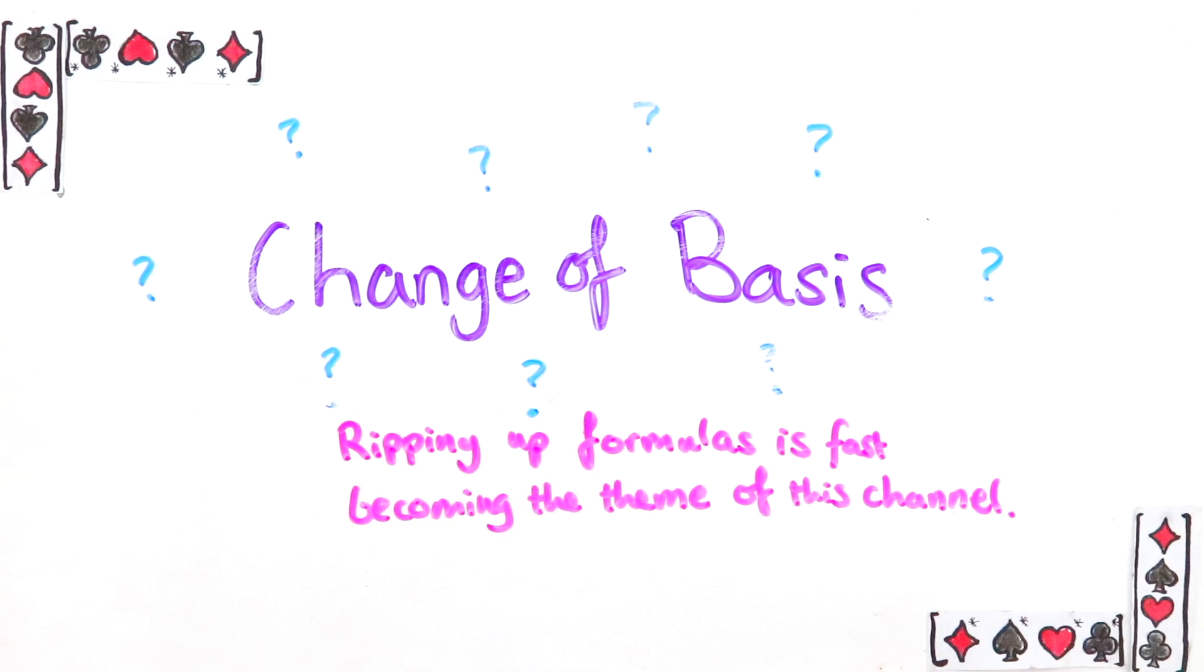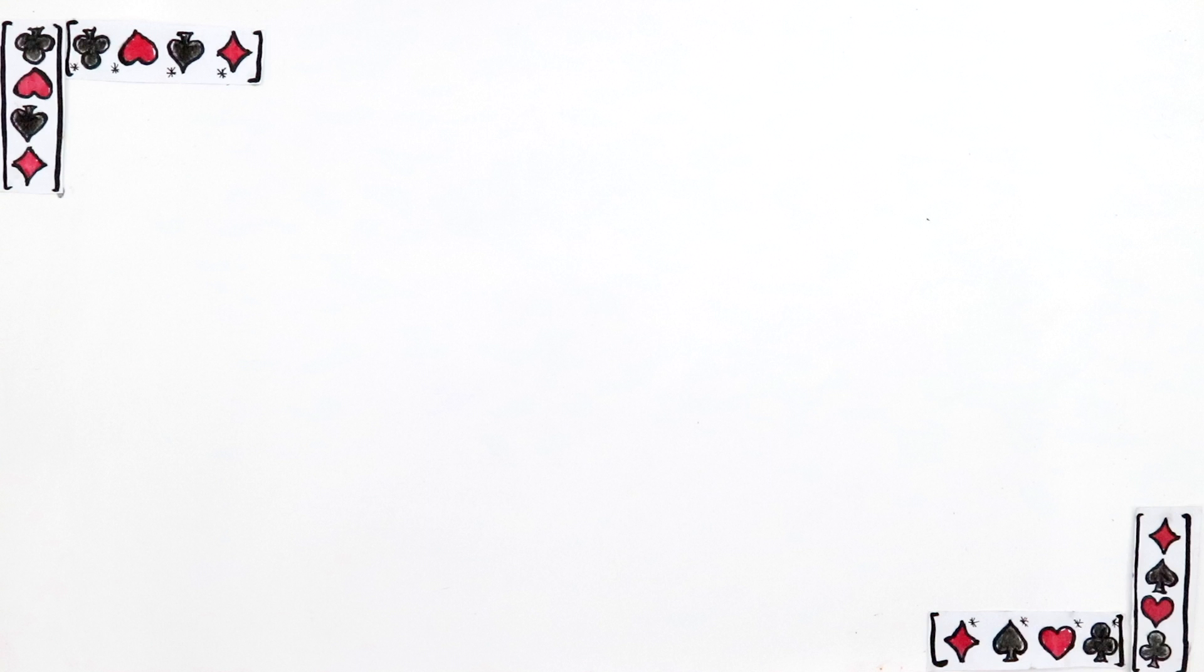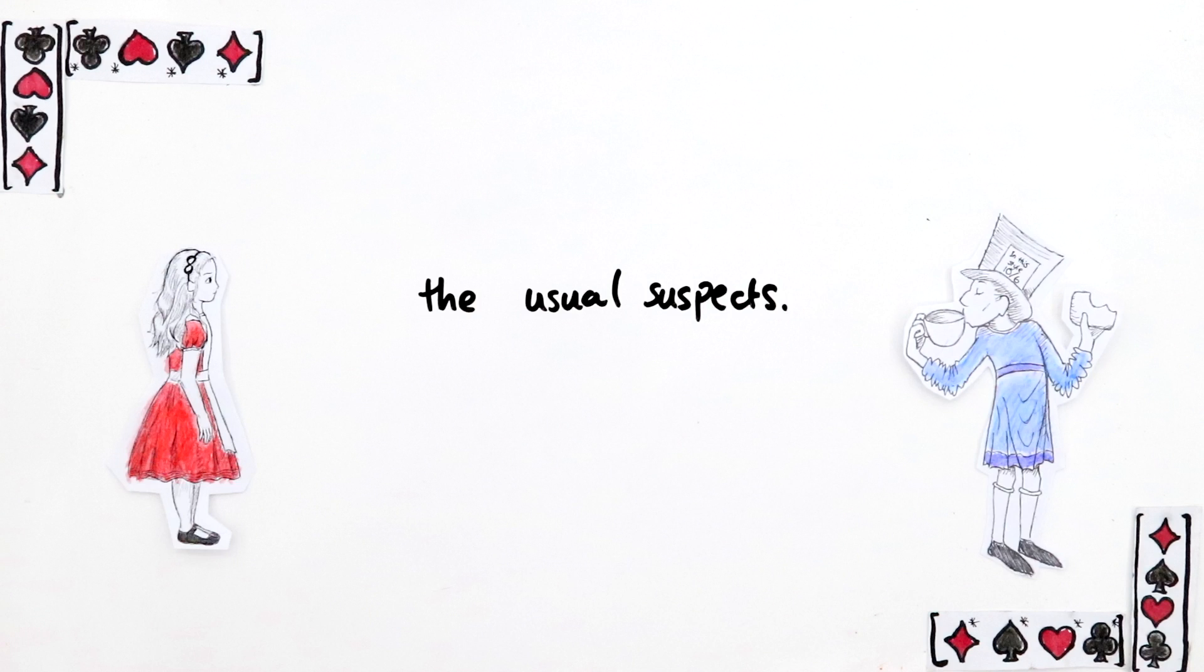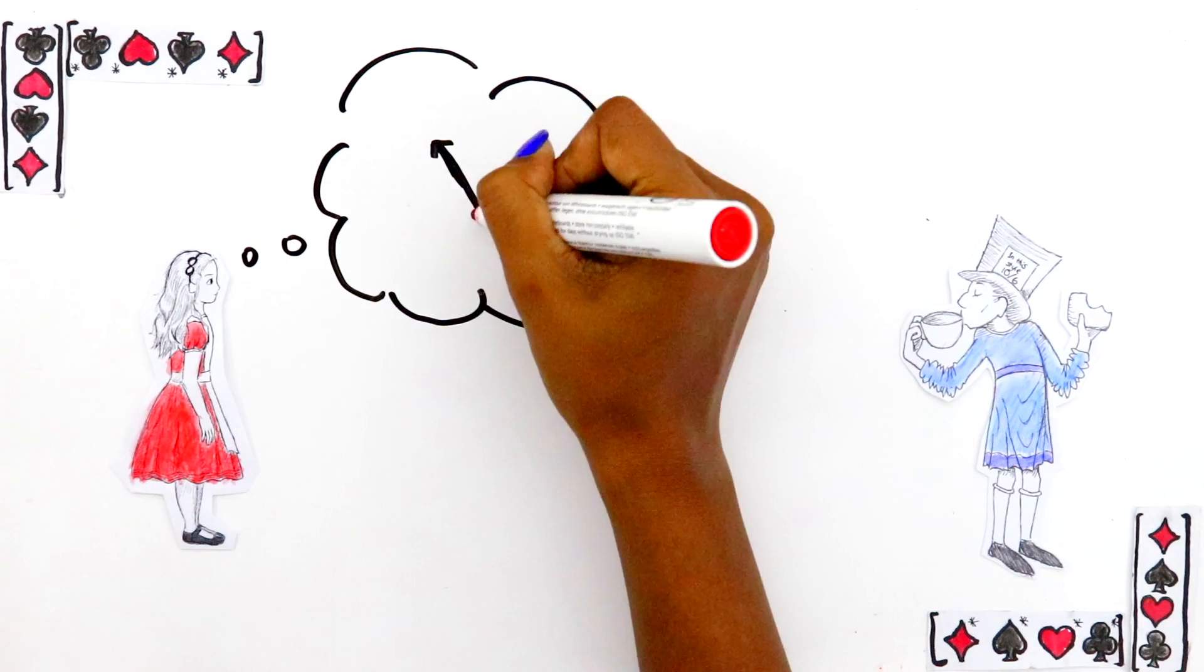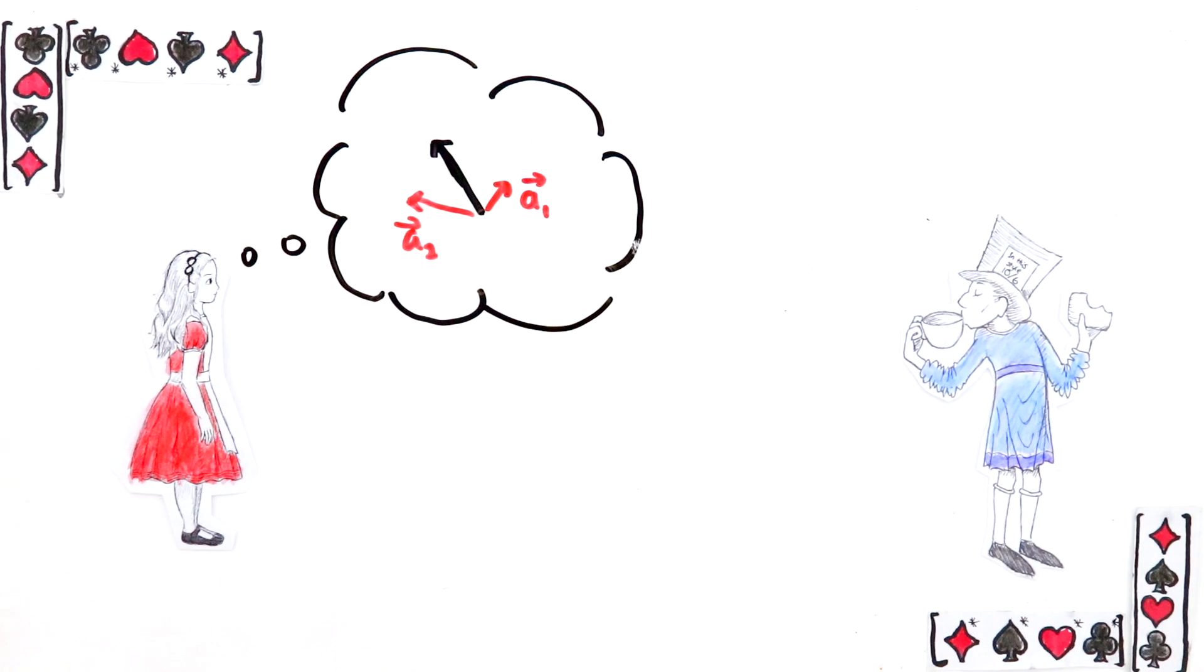So here's what a change of basis is. Imagine Alice is trying to describe her vector to Bob. The way to describe any vector is to pick a basis and then the vector can be described as a linear combination of those basis vectors.